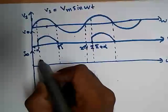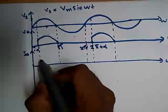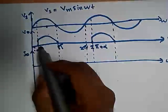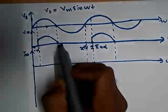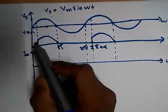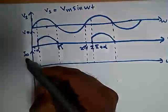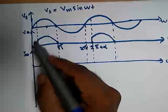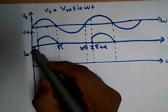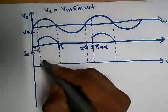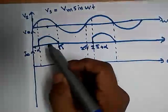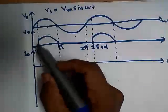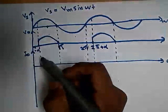According to Ohm's law, current through the resistor is I equal to V by R. The V waveform is the V0 waveform, so I0 equal to V0 divided by R. Only a change in magnitude will occur; the waveform is the same as V0.